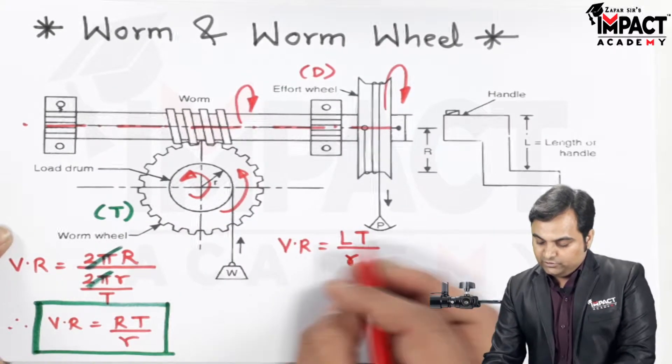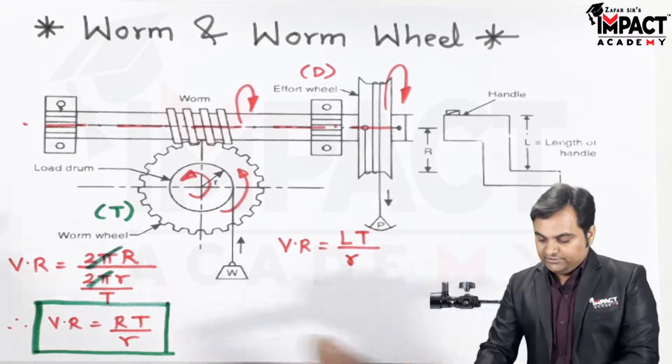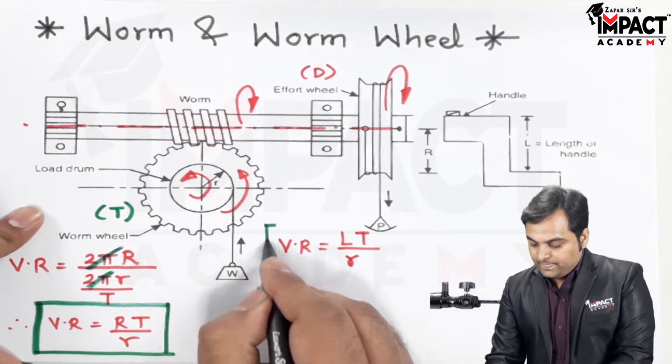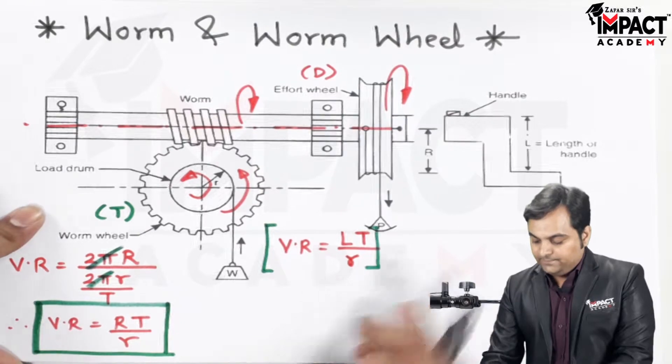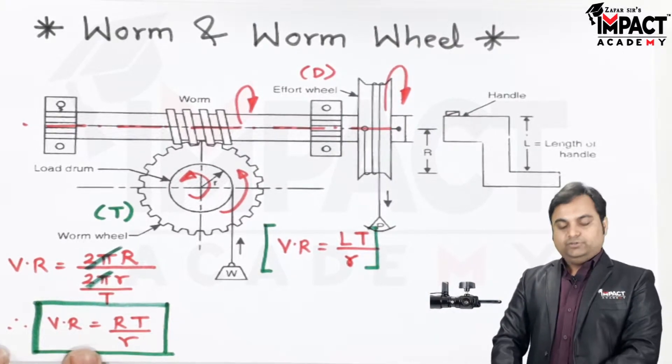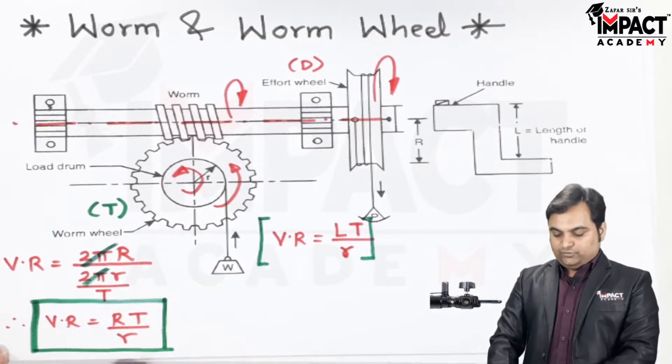which is the radius of the load drum. So this formula needs to be used if it is a worm and worm wheel with a handle, and R times capital T divided by small r is to be used if there is an effort wheel. We can see that by applying comparatively less effort, heavy load gets lifted. Once